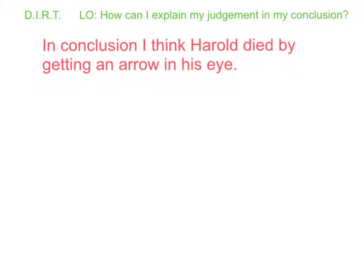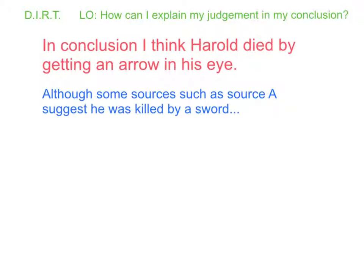So let's start with a basic conclusion. In conclusion, I think Harold died by getting an arrow in his eye. Now what we need to do is explain why we think Harold died by getting an arrow in his eye rather than the other option, which was that he might have been killed by a sword. We'll start off by pointing out that some sources, like source A, actually suggest he was killed by a sword.